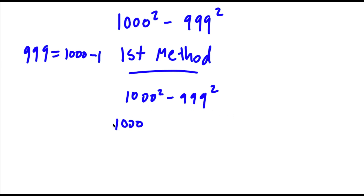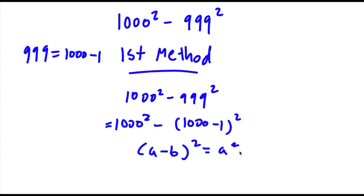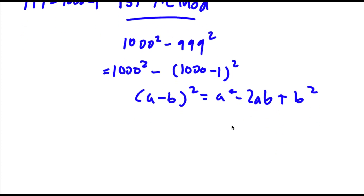So now I have 1000 squared minus (1000 minus 1) squared. Now if I have something in the form (a minus b) squared, this is equal to a squared minus 2ab plus b squared. So in this case a is equal to 1000 and b is equal to 1.